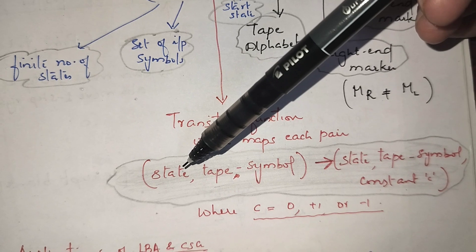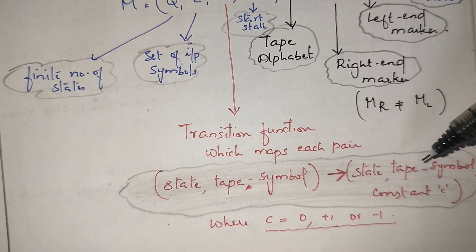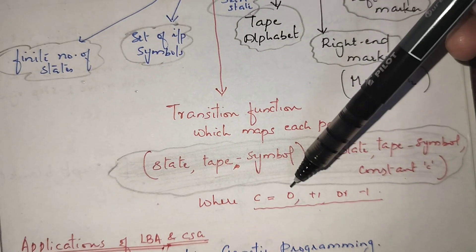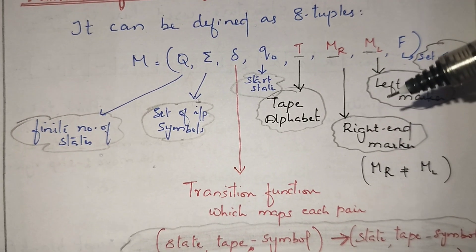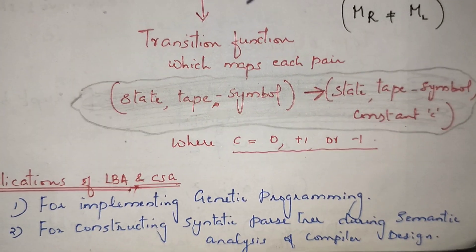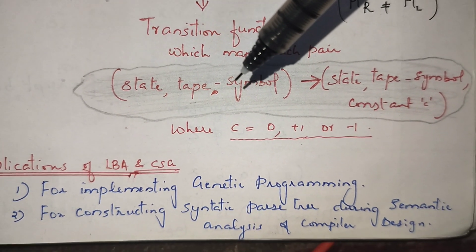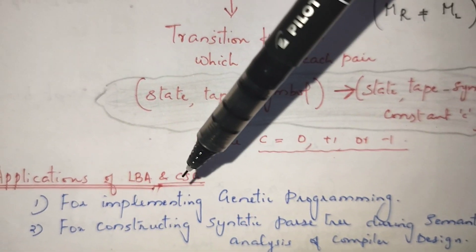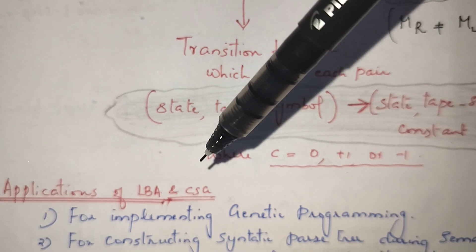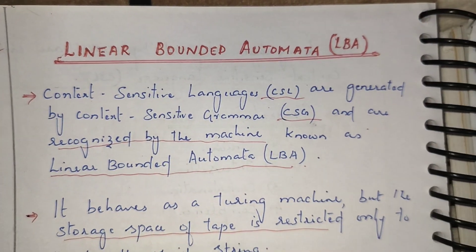The transition takes a state and tape symbol and gives a state, input, tape symbol, and a direction constant whose value is 0, +1, or -1. It is used for genetic programming and in compiler design, specifically in semantic analysis for constructing a parse tree. For constructing a parse tree we can use linear bounded automata, and for genetic programming also we can use linear bounded automata and context sensitive grammar.